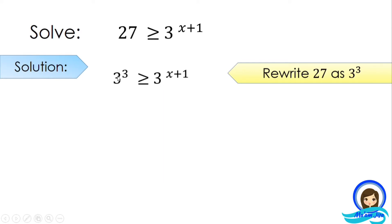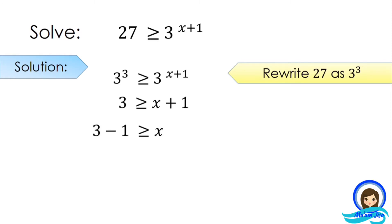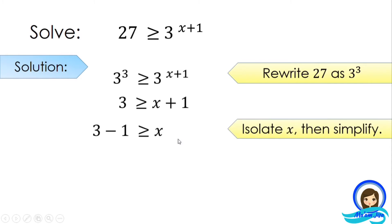The purpose of rewriting 27 as 3 cubed is to make sure that the expressions have the same bases. Whenever they have the same bases, we can equate their exponents and then proceed to finding the value of x. Now they have the same bases already. We have 3 greater than or equal to x plus 1. The next step is to transpose 1 to the other side to isolate x and simplify. 3 minus 1 is 2.